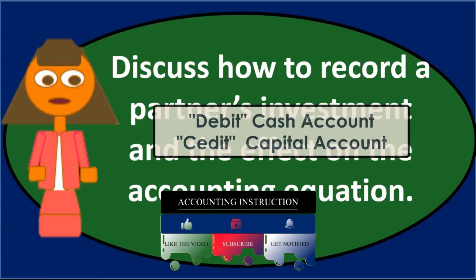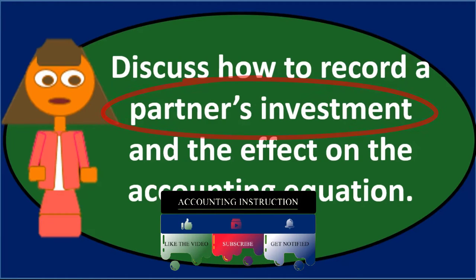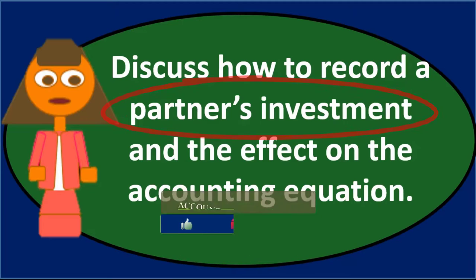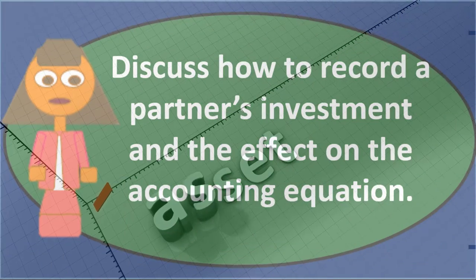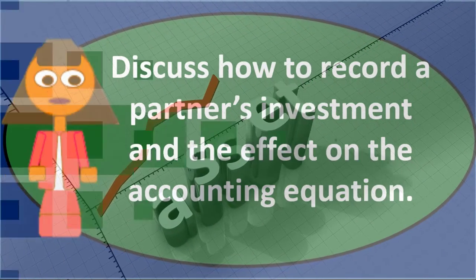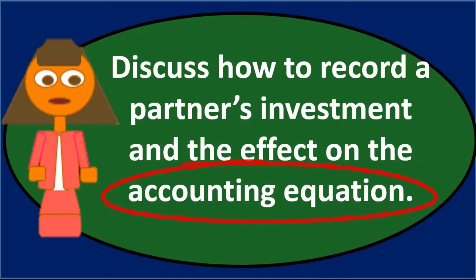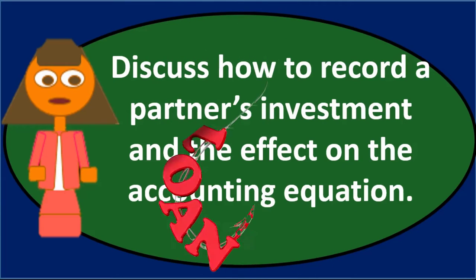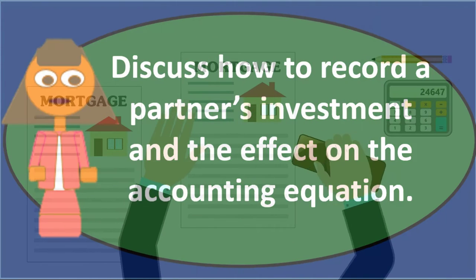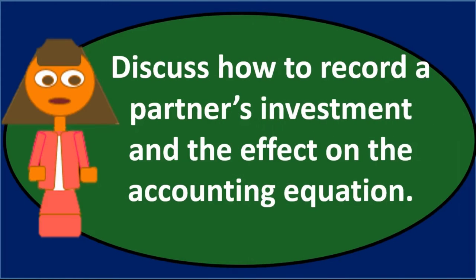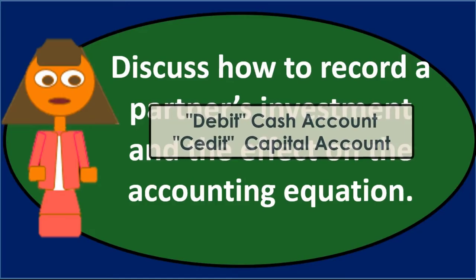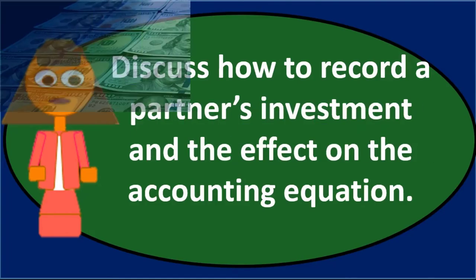So we would debit the cash account, and then we would credit the capital account for the partner's investment — crediting capital for whichever partner. The effect on the accounting equation is an increase to the asset, because cash has increased in the business. The other side reflects who that cash is owed to — similar to getting a loan from a bank, which would be a liability account. Here, the credit goes to the capital account.